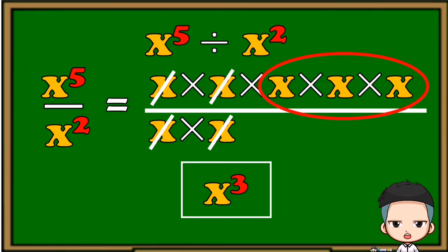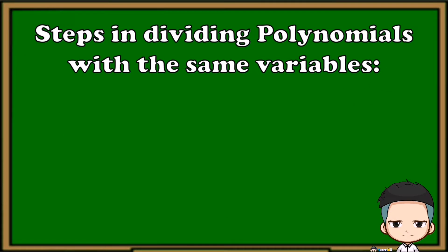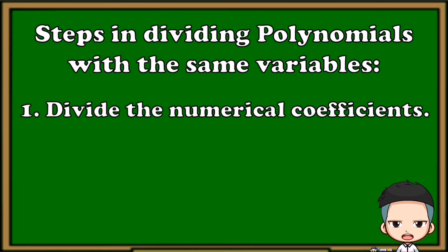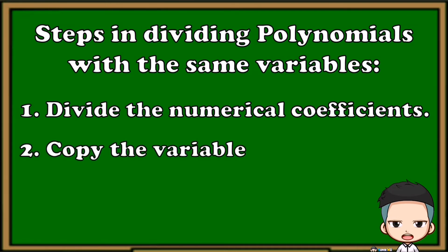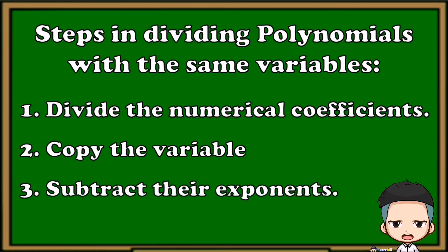This method is not always applicable since it is difficult to expand higher value exponents. Here is another method which is also easy to follow. The steps in dividing polynomials with the same variables: first, divide their numerical coefficients; then copy the variable and subtract their exponents.